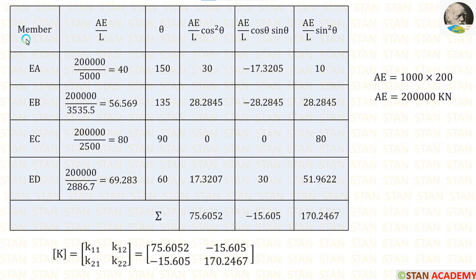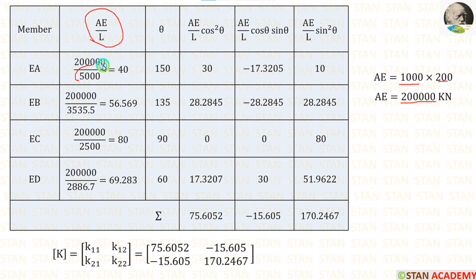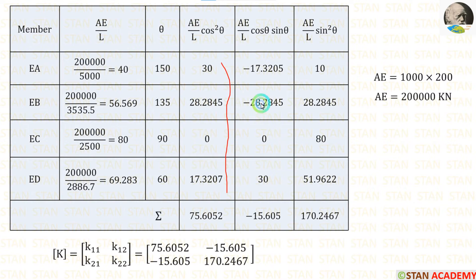Now let us make a table with columns for member, AE/L, theta, AE/L·cos²θ, AE/L·cosθ·sinθ, and AE/L·sin²θ. The area and Young's modulus are given; after multiplying we obtain AE. We then calculate AE/L by converting lengths from meters to millimeters (multiplying by 1000). Using the calculated theta values, we compute all required entries in the table.